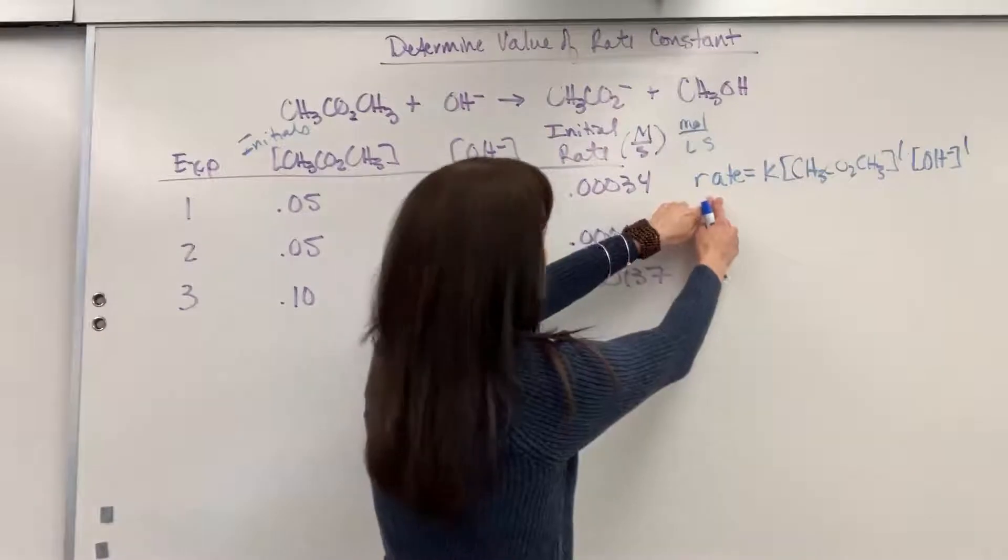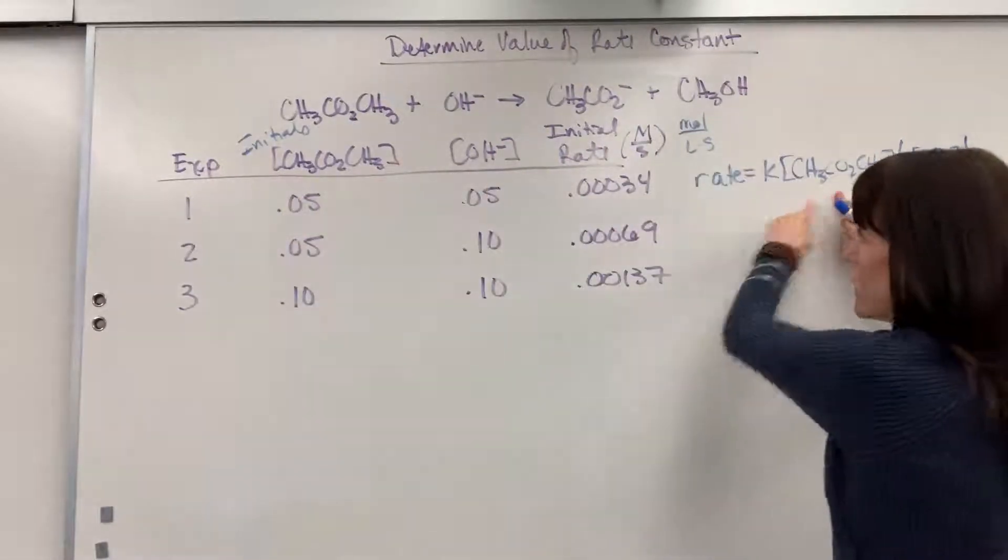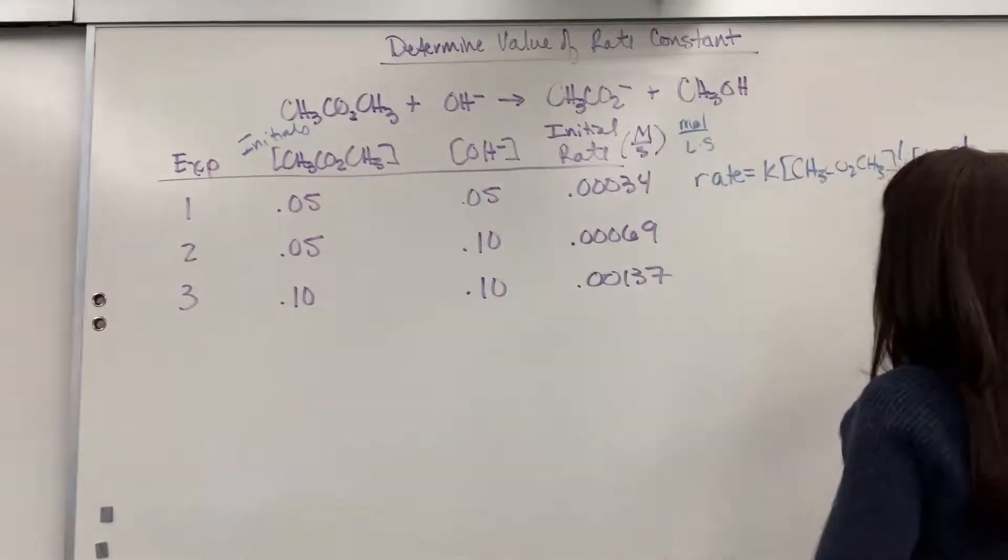Notice there's a rate, concentration of methyl acetate, concentration of hydroxide. You've got your orders. The only unknown is K.